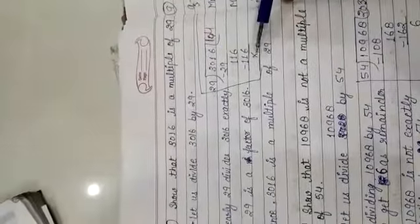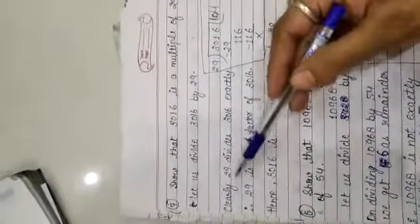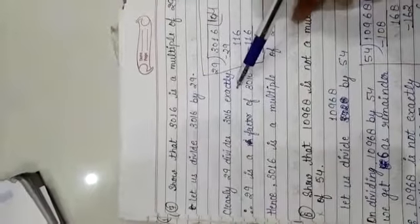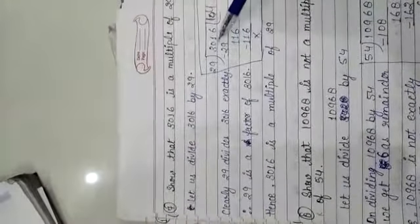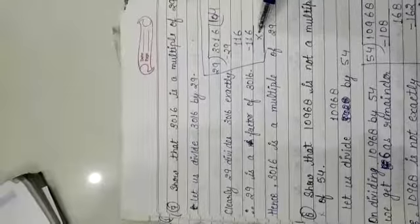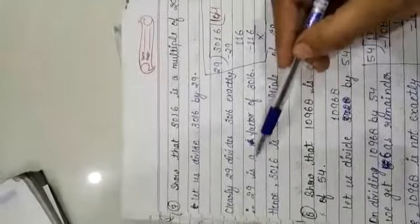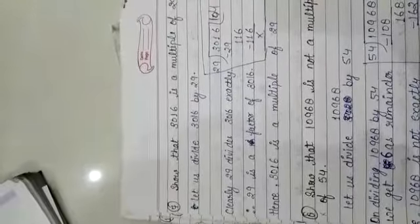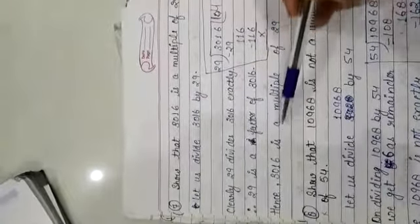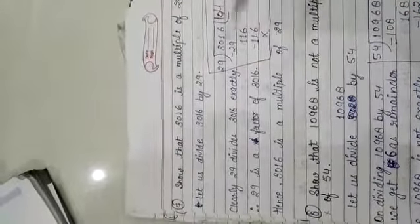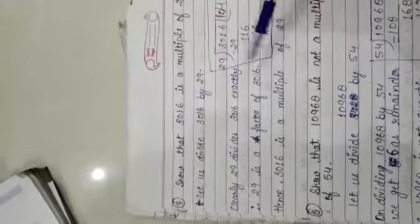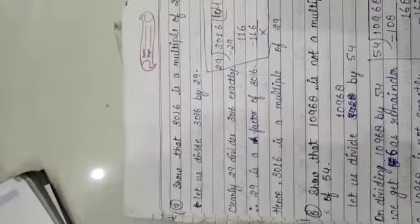After division, we did not get any remainder here. Clearly 29 divides 3016 exactly. So 29 is the factor of 3016. Hence, 3016 is the multiple of 29. If 3016 is a factor of 29, then it is also a multiple.